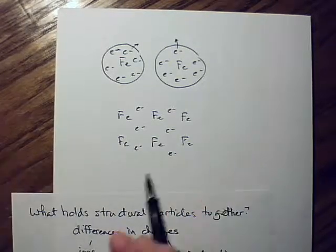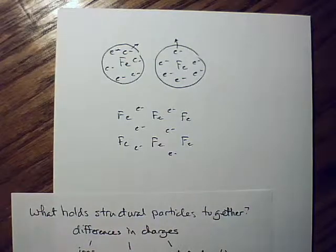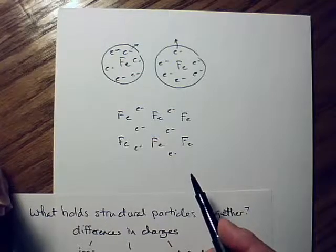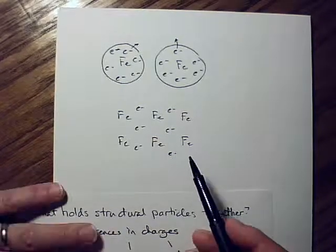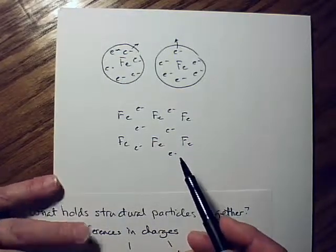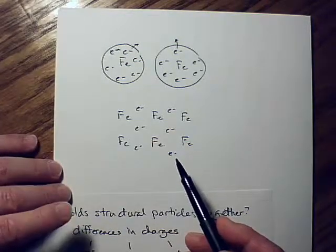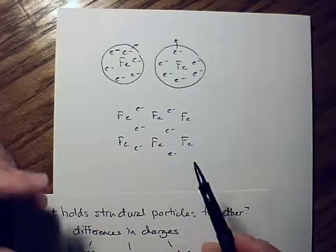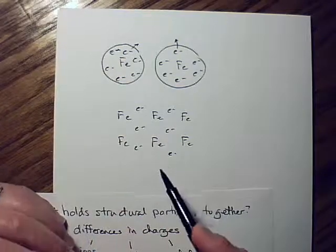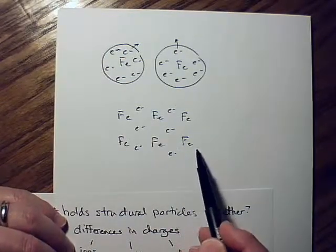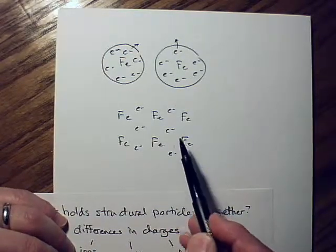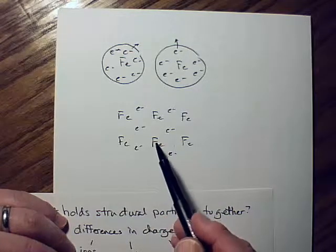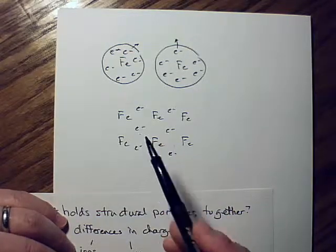In other classes you'll learn more, but for now, understand that metal atoms or ions are held together by the electron sea model: the outer electrons are free-flowing, creating ions attracted to those free-flowing electrons, which are in turn attracted to the ions, and so on.